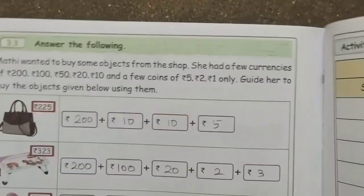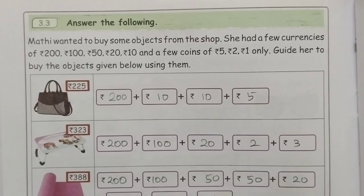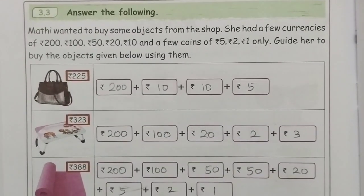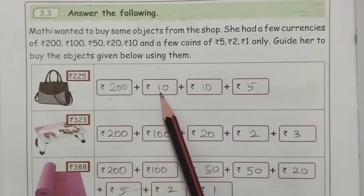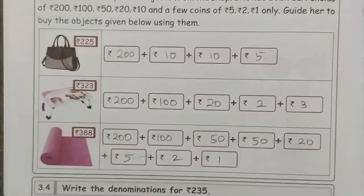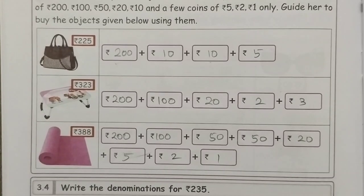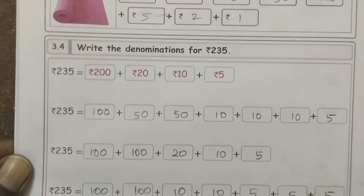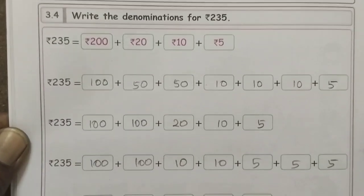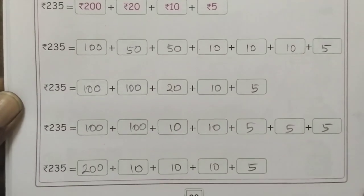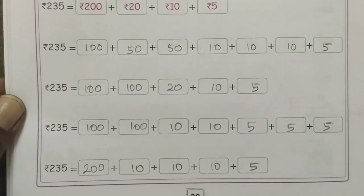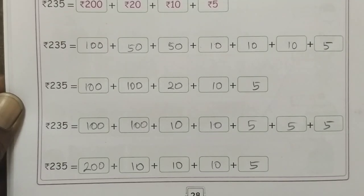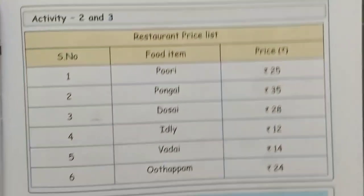Next is answer the following. $225 for this record. $225 for this record includes $210, $220, $225. Write the denominations; if we have one method or another method, we can do this method. That is the activity.